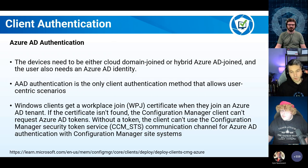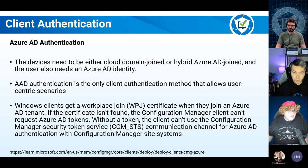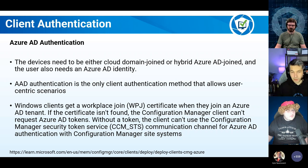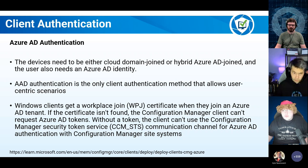If you weren't using PKI and you're kind of cloud-first, Azure AD authentication is an option. Certainly read the docs to understand what is required. The devices either need to be Azure AD joined or hybrid joined — they need that Workplace Join certificate installed on the device. The user also needs to have an identity in Azure so we can issue a token. Interestingly, this is the only authentication method that will allow user-centric scenarios from Config Manager via the CMG. Using client PKI or eHTTP, you're looking at device actions across the CMG only.